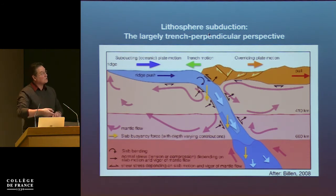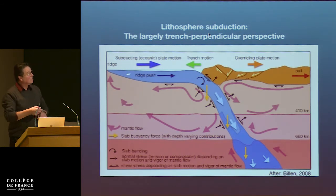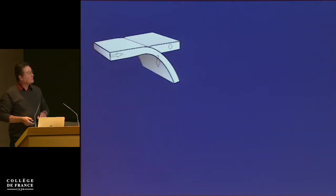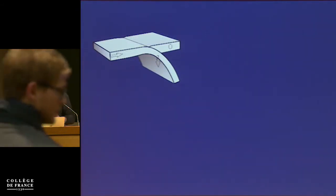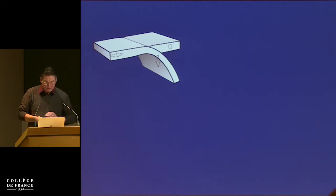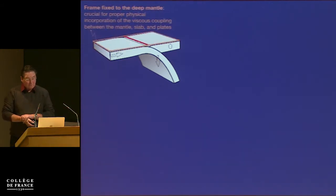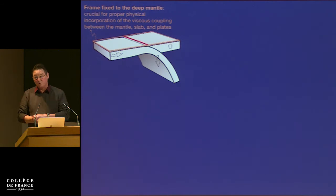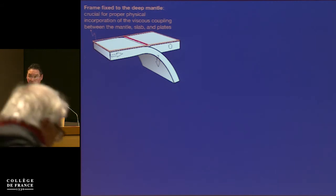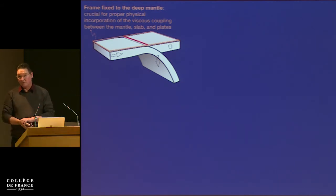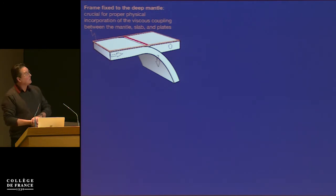There are all kinds of forcings: mantle flow, slab buoyancy, slab pull, interactions with the plates, plate motions — they can go in any direction possible. What I like to do, and this is crucial: if you look at subduction and want to interpret what's going on geodynamically, you have to look at that in a mantle frame of reference — for instance, a hotspot frame, which assumes that plumes are anchored to the deep mantle. This is an example of rollback, where the slab is rolling back, you have trench retreat, mantle resistance, and slab-induced mantle flow.